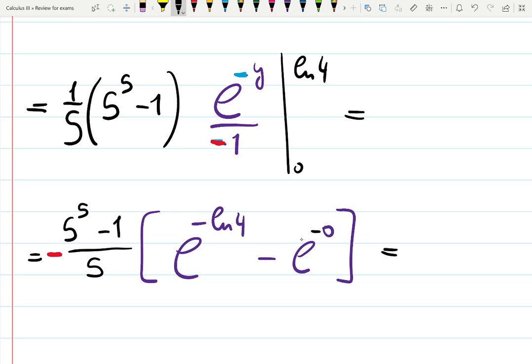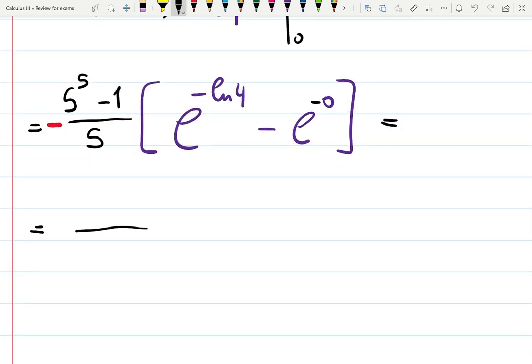It's minus 0 if you really want to be precise. So 1 minus 5 to the 5 because of the negative sign. E to the ln 4 to the minus 1, e and ln undo, so it's just 4 to the minus 1 which is 1 quarter minus 1.